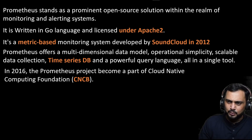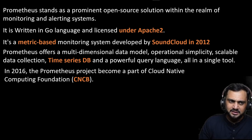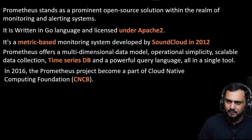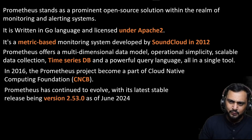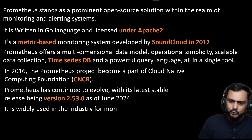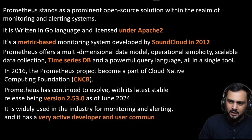There is a certification for Prometheus called PCA — Prometheus Certified Associate. It consists of multiple choice questions only, not like Kubernetes where you have to finish a lab. Prometheus has continued to evolve with its latest stable release being version 2.53.0 as of June 2024. It is widely used in the industry and has a very active developer and user community.